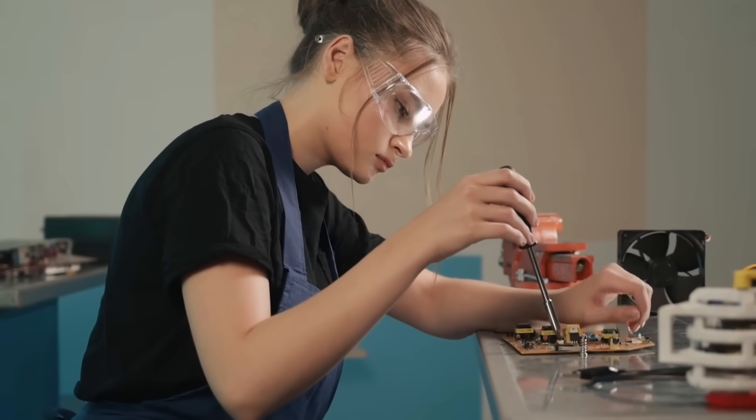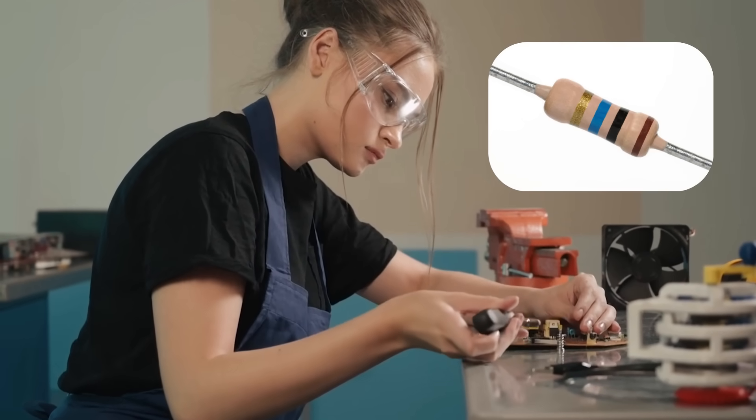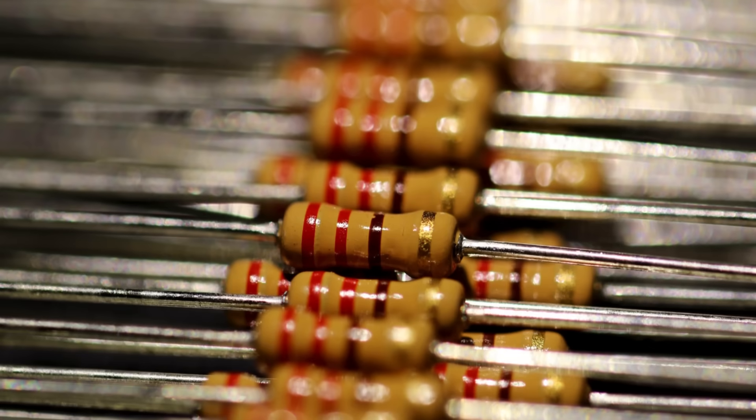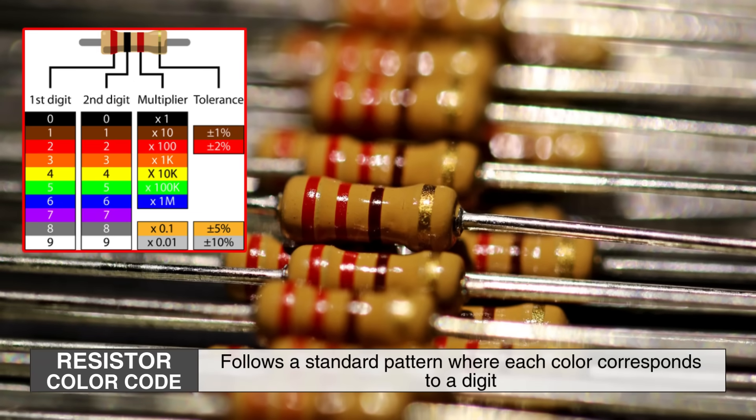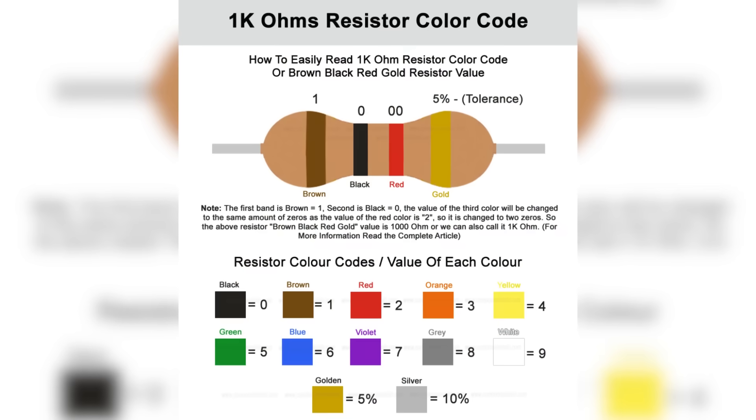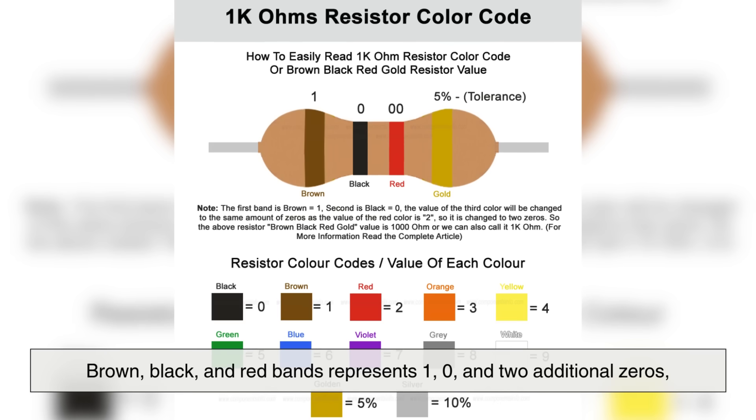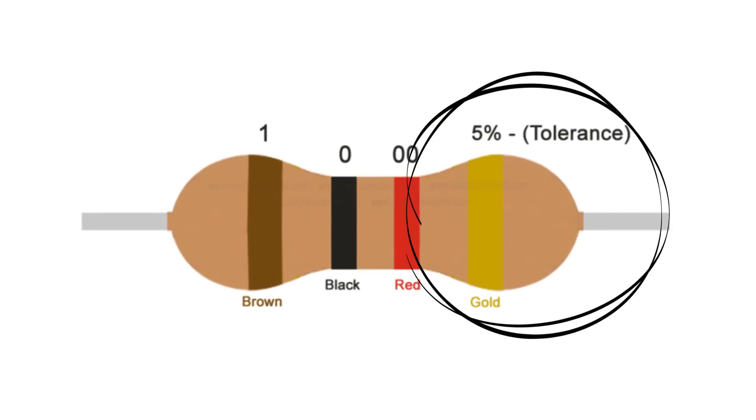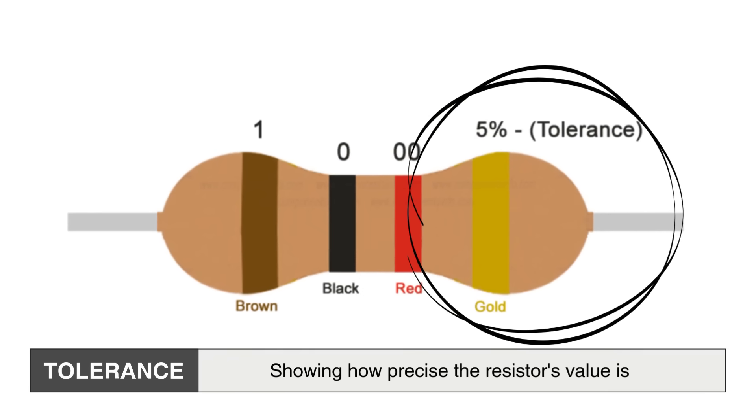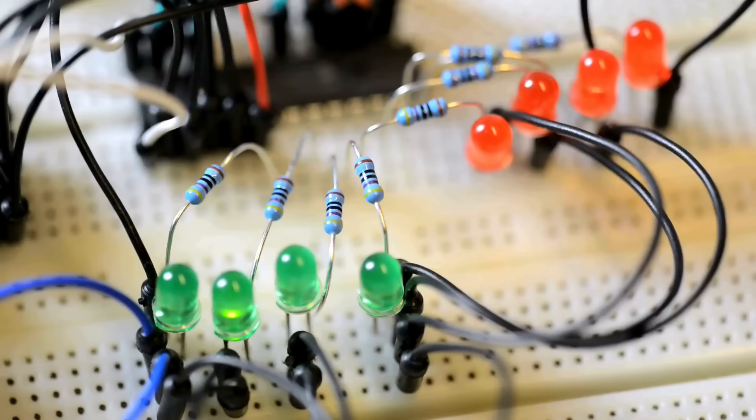If you're into electronics as a hobby or a student learning the basics, understanding resistor color codes is essential. Most fixed resistors have colored bands that indicate their resistance value. This system, known as the resistor color code, follows a standard pattern where each color corresponds to a digit. For example, a resistor with brown, black, and red bands represents one, zero, and two additional zeros, making it a 1,000 ohm resistor. The last band typically indicates tolerance, showing how precise the resistor's value is. Learning to read resistor values quickly can save time when building and troubleshooting circuits.